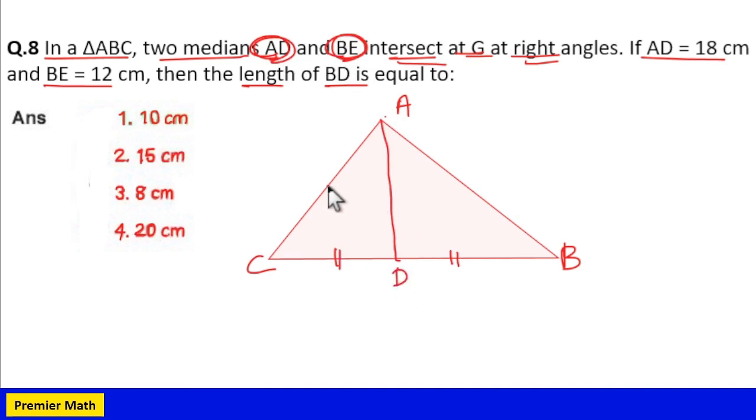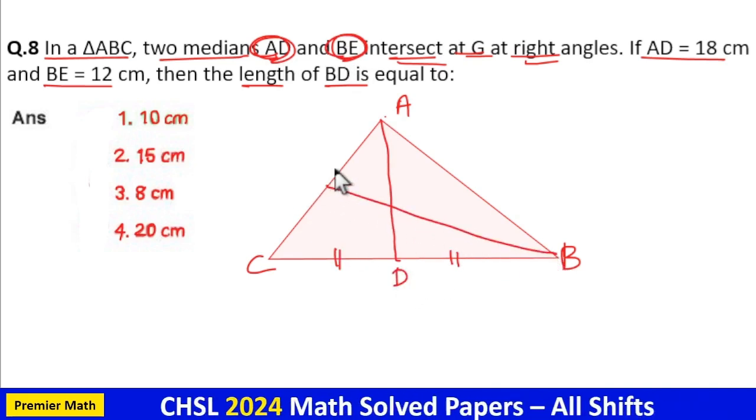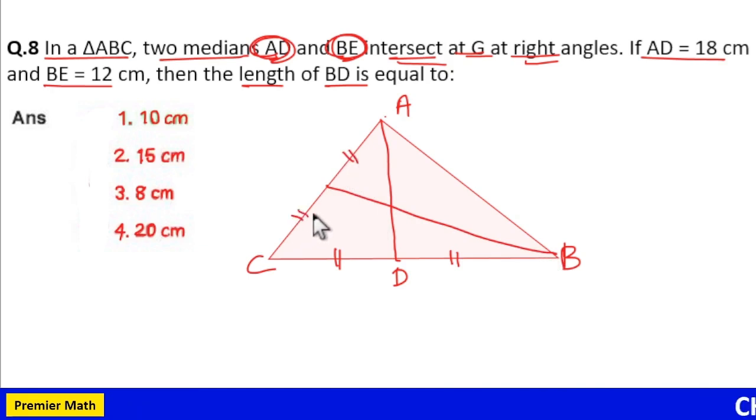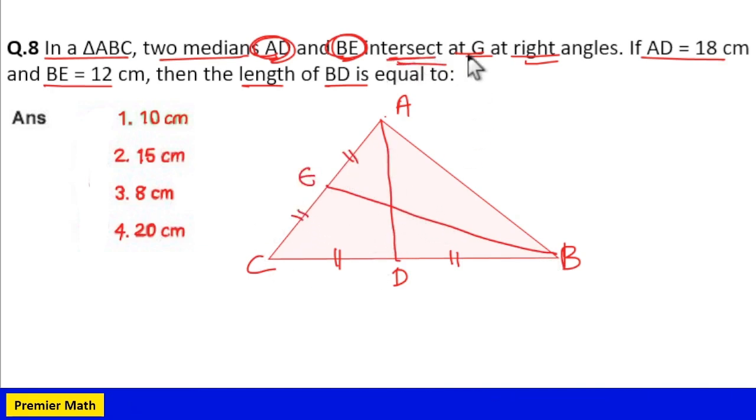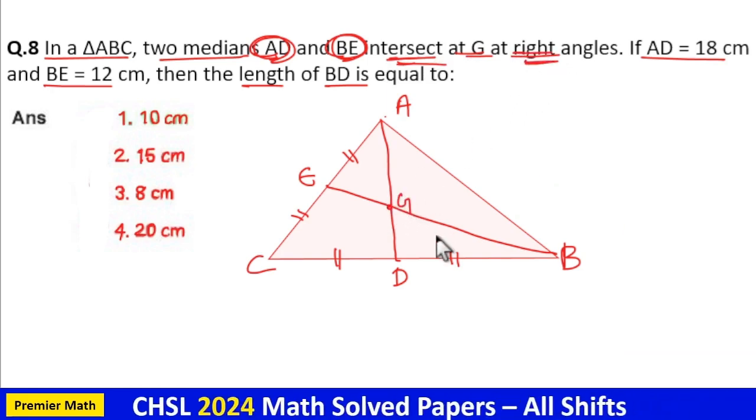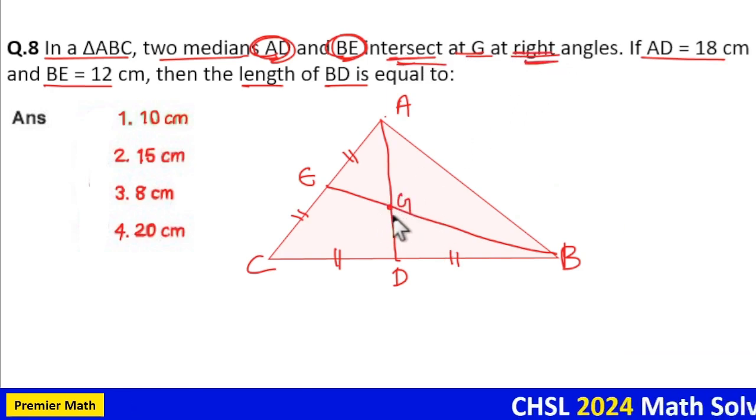This is AD. Same way, BE is another median, which means these two lengths are equal. These two medians intersect at G. This point is G at right angles, which means the angle between two medians is 90 degrees.